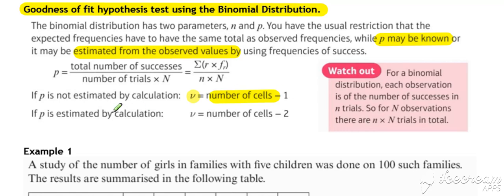But if P is estimated by calculation, that actually adds another constraint to our values. Because the fact that we've estimated P means that we now have two summary bits of information about our data. So we know what the cells add up to, that's our first constraint.